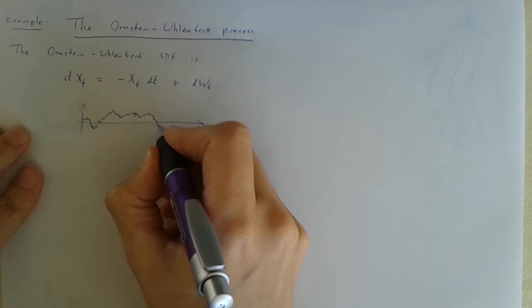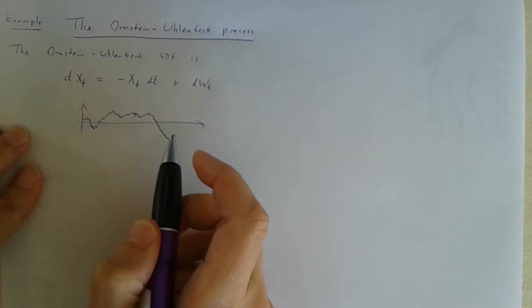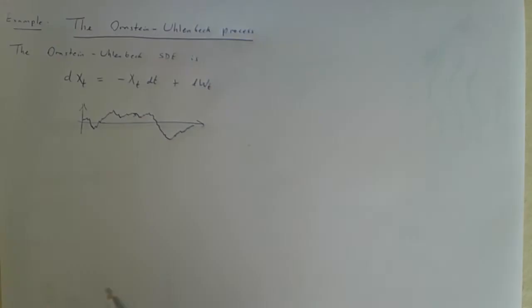It's not to say it will get there but let's say it does. And then whenever it's got a negative value its drift is positive so it's again drifting back towards zero.